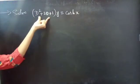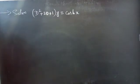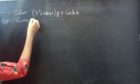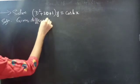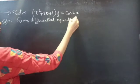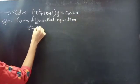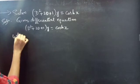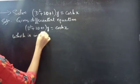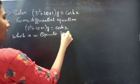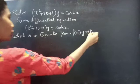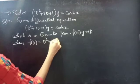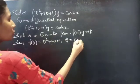Problem: solve (D² + 2D + 1)y = cosh(x), which is a non-homogeneous equation. Solution: the given differential equation in operator form is f(D)·y = Q, where f(D) = D² + 2D + 1 and Q = cosh(x).